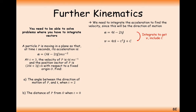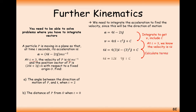Integrating the acceleration: 4 integrates to 4t, and 2t integrates to t squared, giving plus c on the end. From the given information, at t equals 3 the velocity is 6i. Substituting t equals 3 and v equals 6i, moving everything to the other side, c comes out as the vector minus 6i plus 9j.